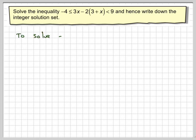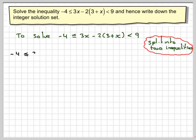The first step is to solve this inequality. What you need to do is split it into two parts and solve each bit separately. So splitting it into two separate inequalities we get -4 ≤ 3x - 2(3 + x) and then 3x - 2(3 + x) < 9.